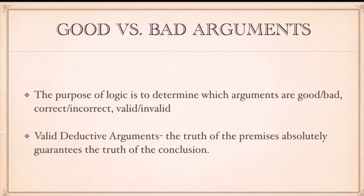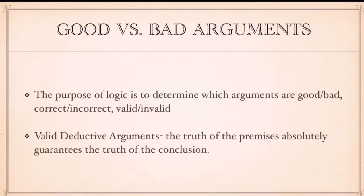A valid deductive argument is one in which the truth of the premises absolutely guarantees the truth of the conclusion — nothing else could follow but that conclusion. For example, take the premise: I have a dog and I have a cat. From that, you can conclude I have a dog, and you can conclude I have a cat. We assume the truth of the premises in logic and then ask whether a particular conclusion follows from those premises.